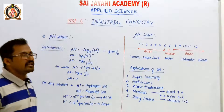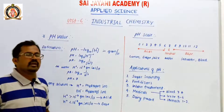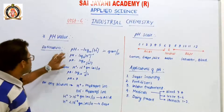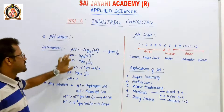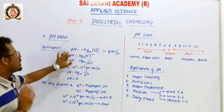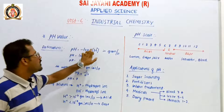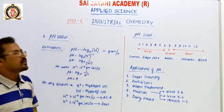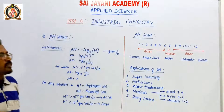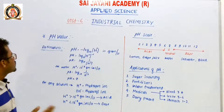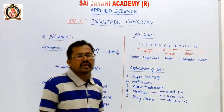These are all about the definition of pH value. pH is given by the equation: pH = −log₁₀[H⁺] in gram ions per liter. Next, we will move to the pH scale.